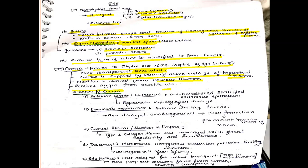There are five layers of the cornea. First is the anterior corneal epithelium, made up of non-keratinized stratified squamous epithelium — this can regenerate after damage. Second, inner to that, is Bowman's membrane, which cannot regenerate. Once damaged, it is damaged forever, leading to scar formation and permanent impairment of vision.